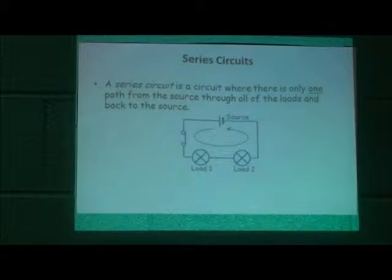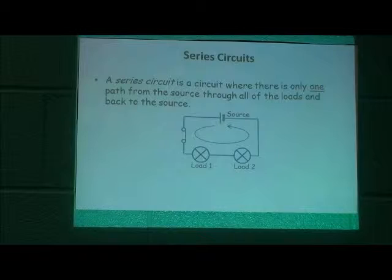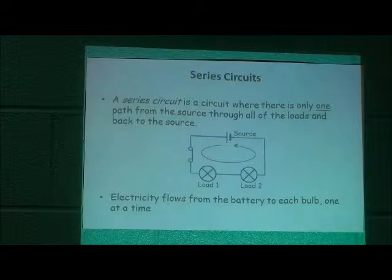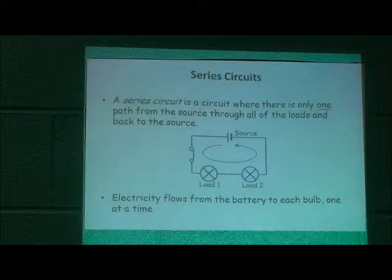It's a single path through all the components. In the diagram, we show two loads, and we could have as many loads as required in a row, as long as they continue to form one single path. Electricity flows from the battery to each bulb one at a time, then back to the source.